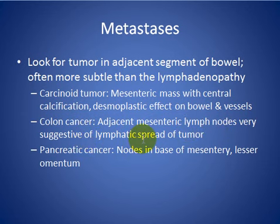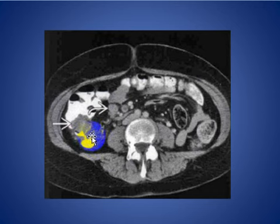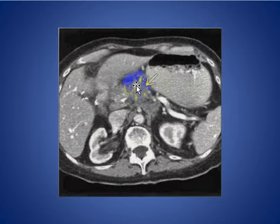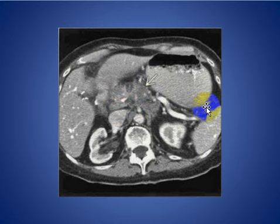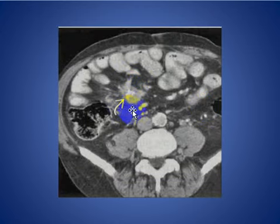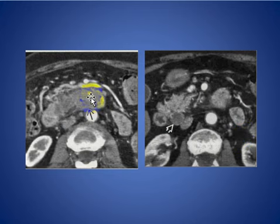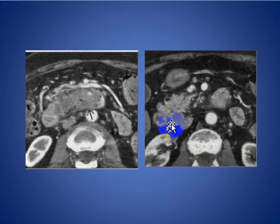Pancreatic cancer nodes at the base of the mesentery and in the omentum are usually seen. Here you see a patient with cecal carcinoma and mesenteric lymph node adjacent to the tumor. Here is a patient with pancreatic carcinoma with lymph nodes at the base of the mesentery. Here is a patient with carcinoid tumor associated with central calcification and desmoplastic reaction of the bowel and blood vessels. Here is a patient with duodenal carcinoma filling the duodenum associated with low-attenuated lymphadenopathy behind the pancreatic head.